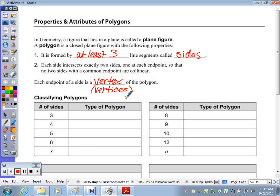Let's fill in the table. A three-sided polygon is called a triangle. You can go ahead and write in the terms. Four is quadrilateral, five is pentagon, six is hexagon.